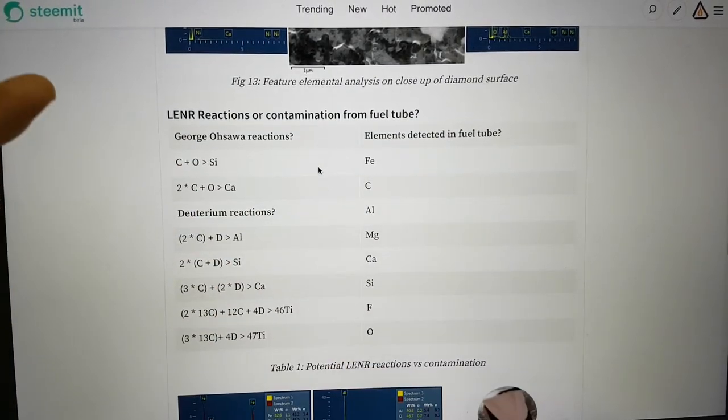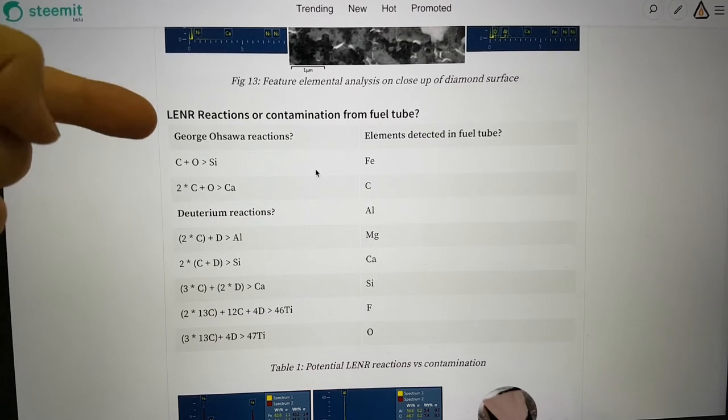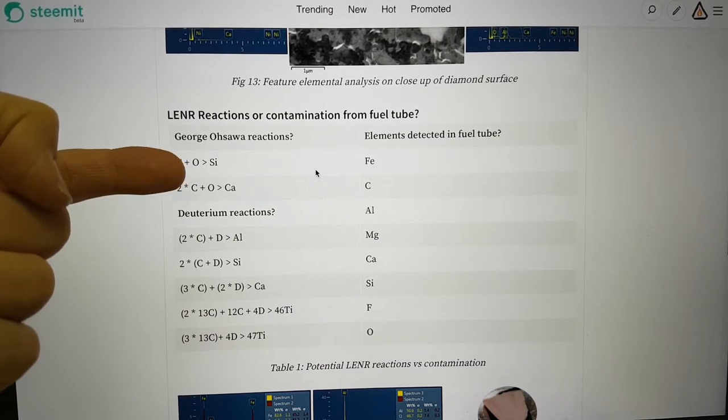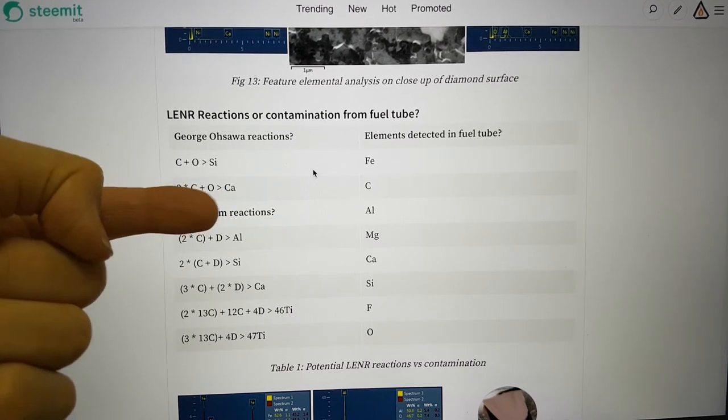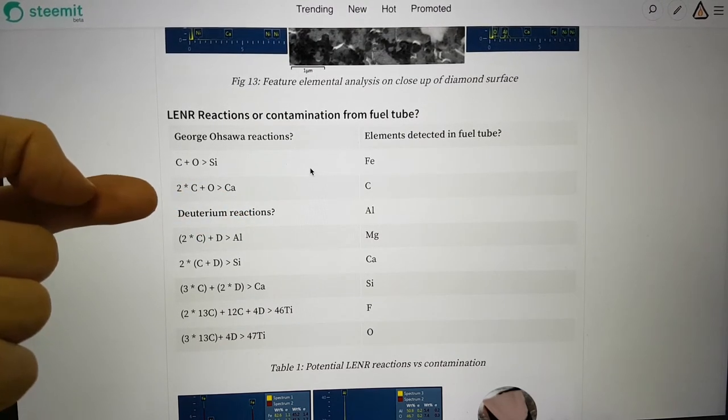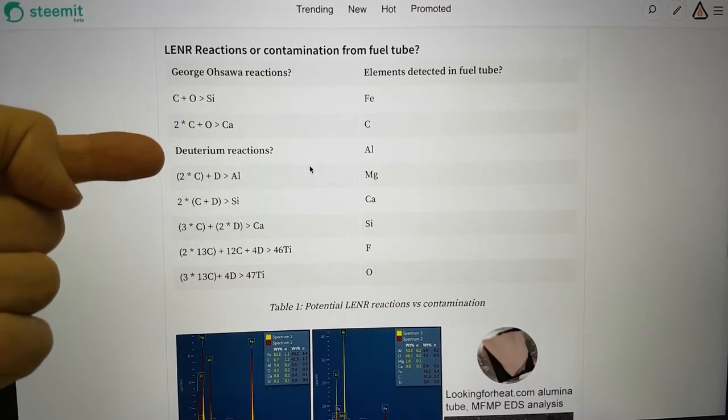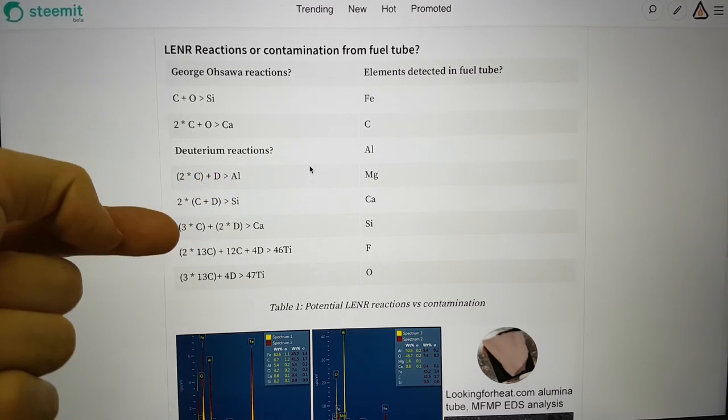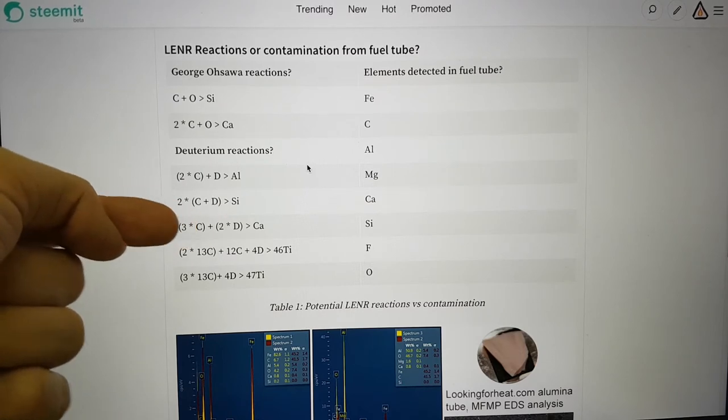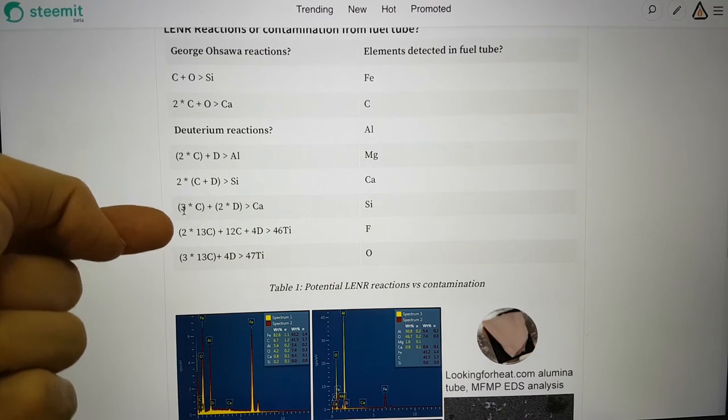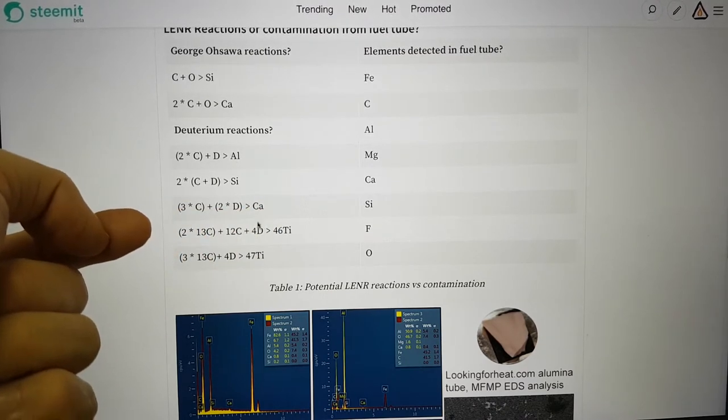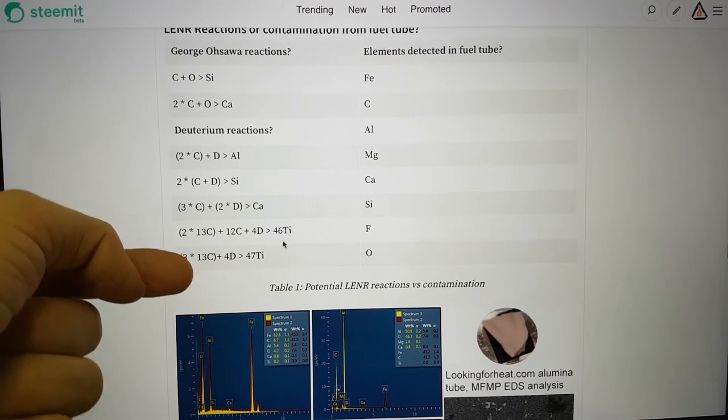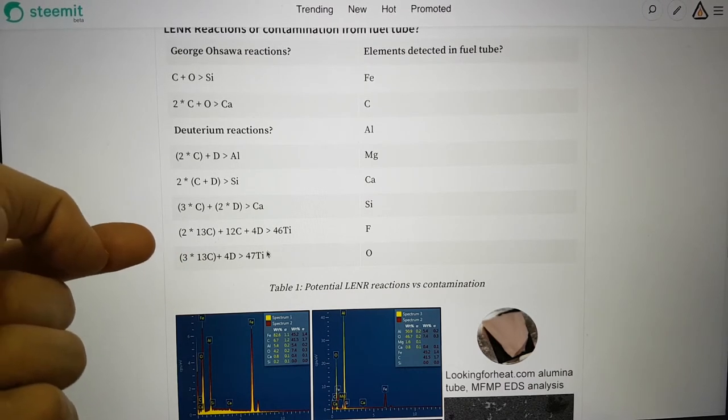If we assume maybe there were some Lenin reactions going on, could they be George-Ossauer reactions? So the silicon is coming from a combination of carbon from the diamond and oxygen from the deuterium oxide. Maybe the calcium is coming from 2 carbons plus oxygen. Or are they straight deuterium carbon reactions? 2 carbons plus a deuteron goes to aluminum, or carbon and deuteron times 2 to silicon, or 3 times carbon plus 2 times deuteron to calcium.